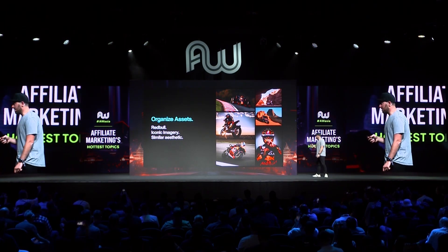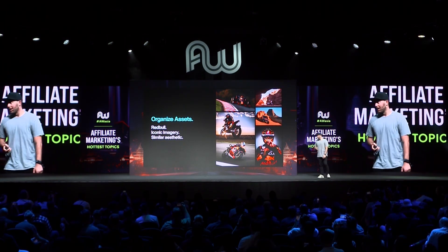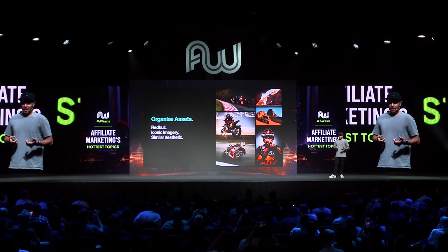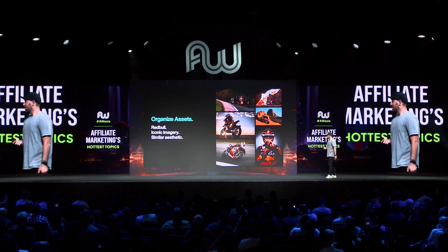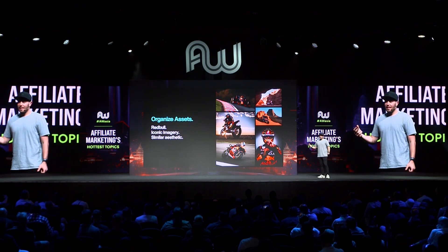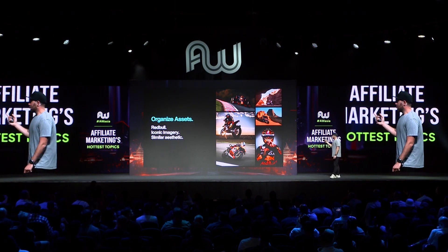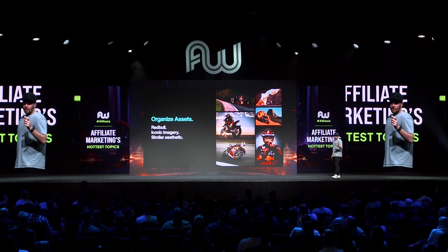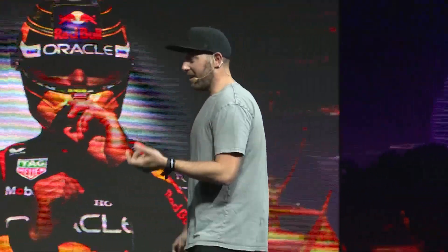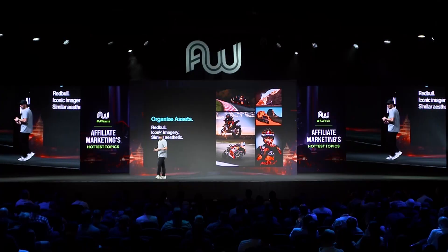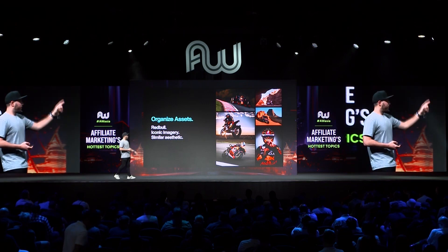First we're going to organize our assets. This is Red Bull — if you can see that on the screen — but they're not a client of mine, I'm just using this for example purposes. They have very iconic imagery and to be honest their stuff just kicks ass, so I wanted to use it. Looking at this you can see they all have a very unique visual signature — there's a lot of contrast, the colors really pop, the composition is a little interesting. We're going to take this and turn it into a thousand other pictures that look just like this. You can see that F1 car at the top.